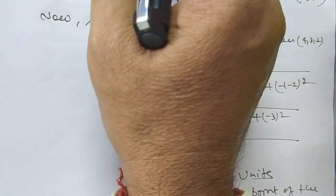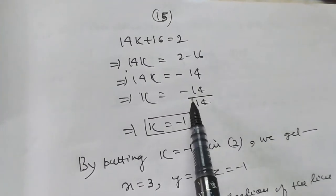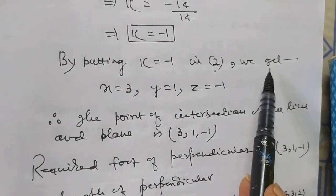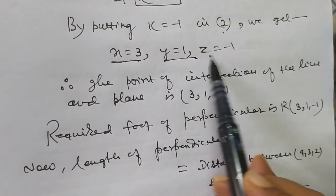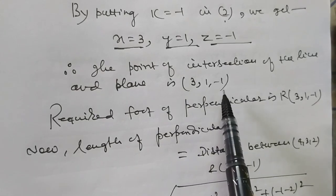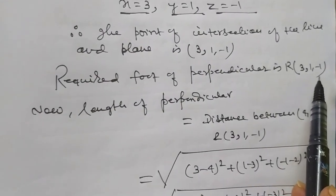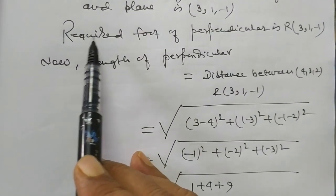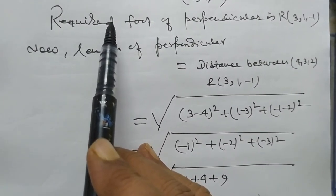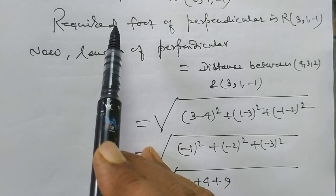14k + 16 = 2, so 14k = 2 - 16, 14k = -14, and k = -1. By putting k = -1, we get x = 3, y = 1, z = -1. The point of intersection of the line and plane is (3, 1, -1). The required foot of perpendicular is also (3, 1, -1). In this way we can solve this problem.